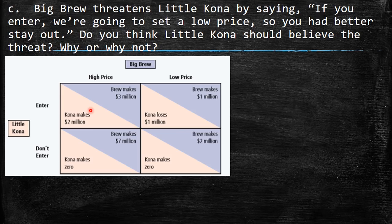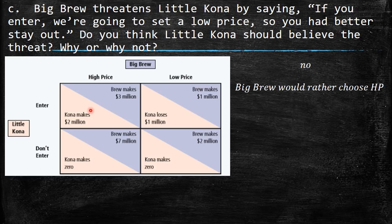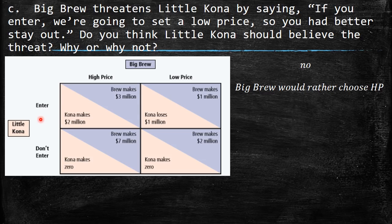Big Brew threatens Little Kona: 'If you enter, we'll set a low price, so you'd better stay out.' Should Little Kona believe this threat? No — because if Little Kona enters, Big Brew would still prefer high price (3 million > 1 million). The threat is not credible.